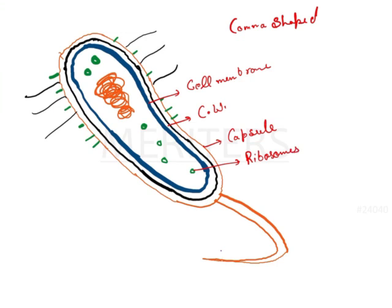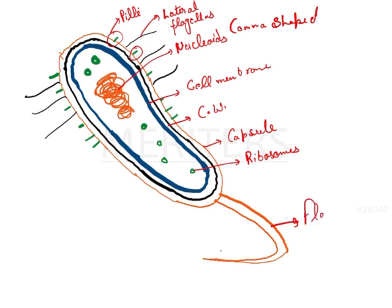Since these are prokaryotes, it will be your nucleoid. These are the lateral flagellas, and these small ones are the pili, and this will be your flagellum. So basically, this is a polar bacteria having flagellum on the single pole. That is going to be the structure of the comma-shaped Vibrio.